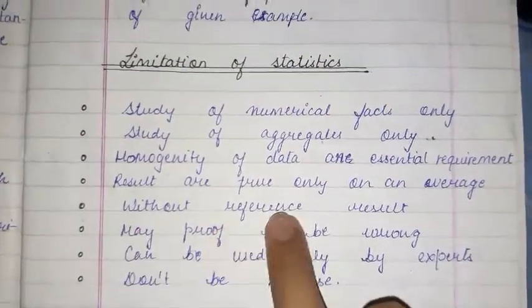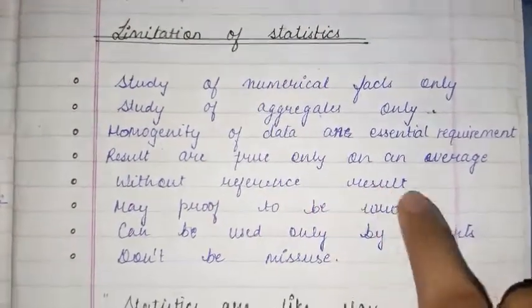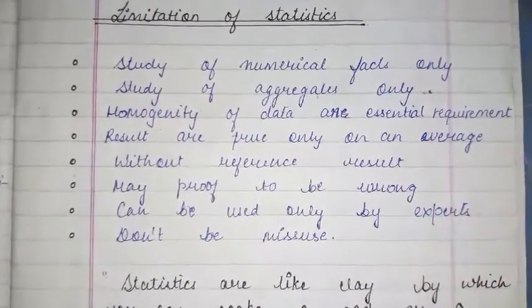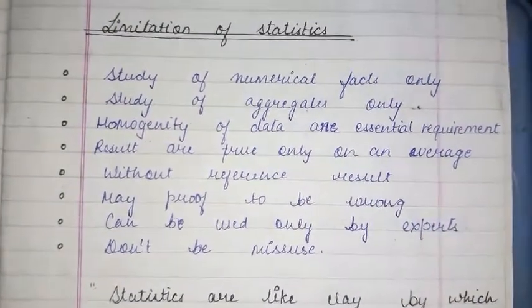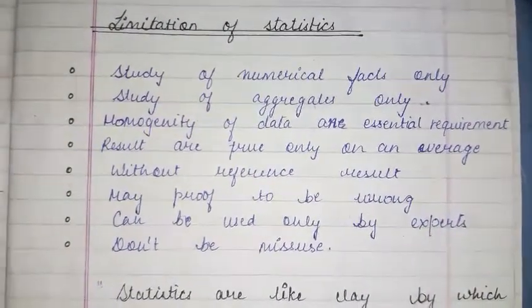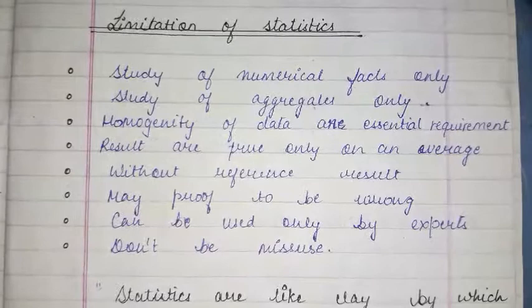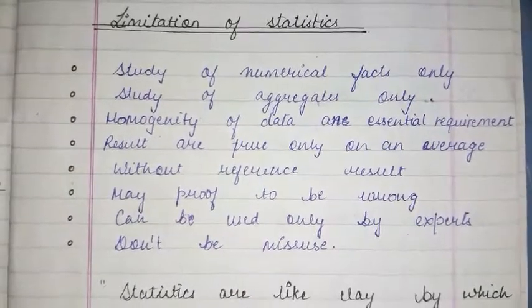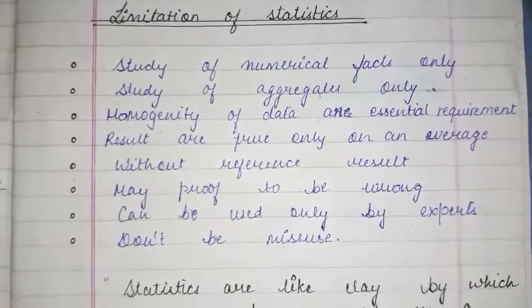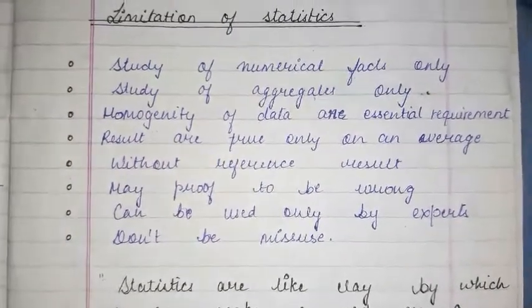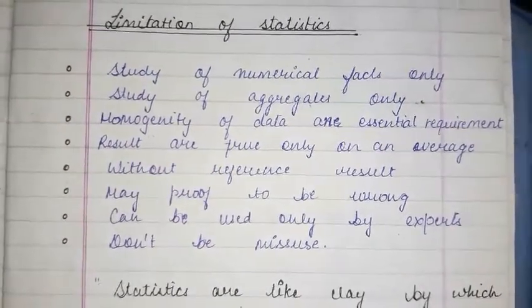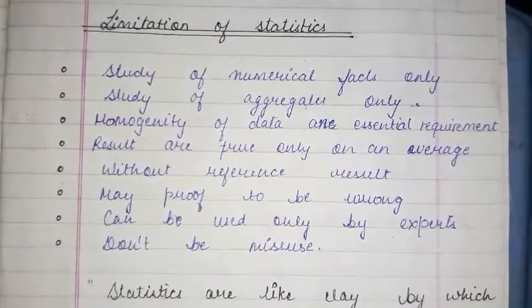The fourth limitation is that results are true only on an average. The average result is true overall, but we cannot say that it is 100% correct in every individual case. The results are true only on an average.